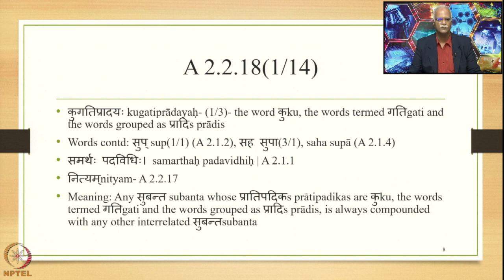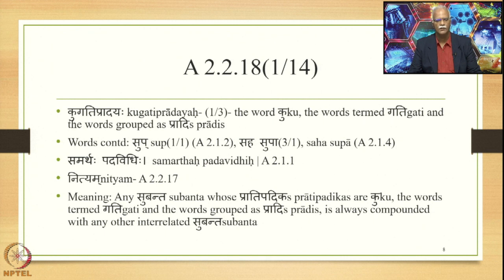The sutra is kugatipradayah (2.2.18). There is only one word in the sutra: kugatipradayah, in prathama-bahuvachana. This compound word consists of: the word 'ku', then words termed 'gati', and the words grouped as 'pradis' — whose initial member is 'pra'. The sutra also continues the word 'nityam' from the previous sutra 2.2.17 (nityam krida-jivika-yoh).